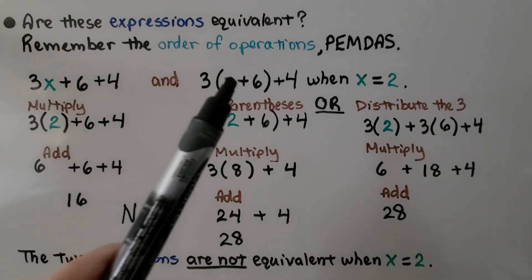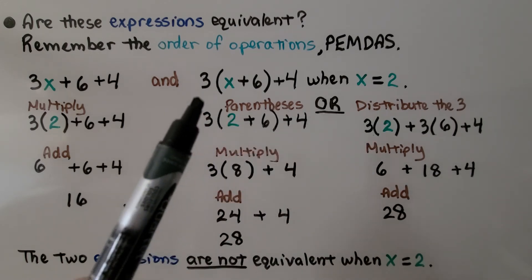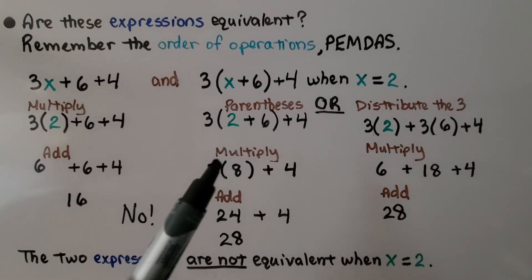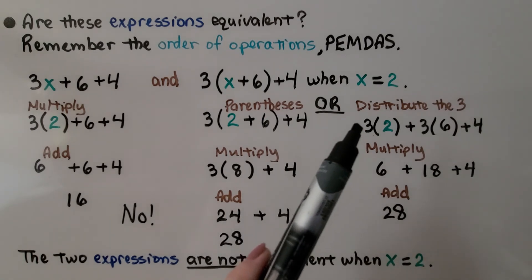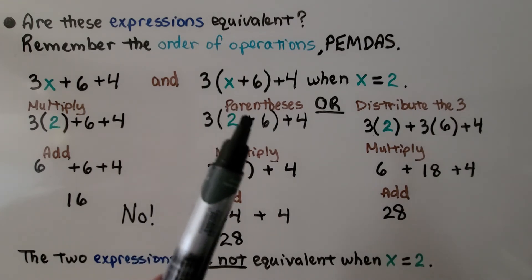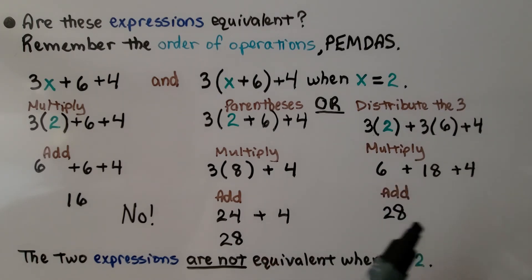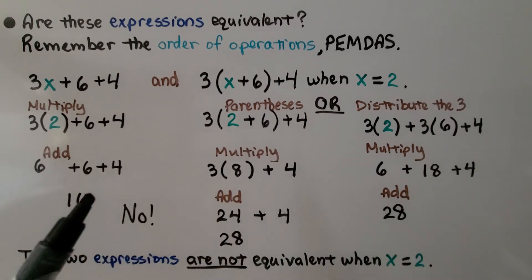For the second expression, because x plus 6 is within parentheses, we can either do the parentheses first or distribute the 3. Doing the parentheses first: 2 plus 6 is 8, then 3 times 8 is 24, plus 4 equals 28. Distributing the 3: 3 times 2 plus 3 times 6 gives 6 plus 18 plus 4, also 28. So whether we work inside the parentheses first or distribute, we get 28. But the first expression gave 16, so the two expressions are not equivalent when x equals 2.